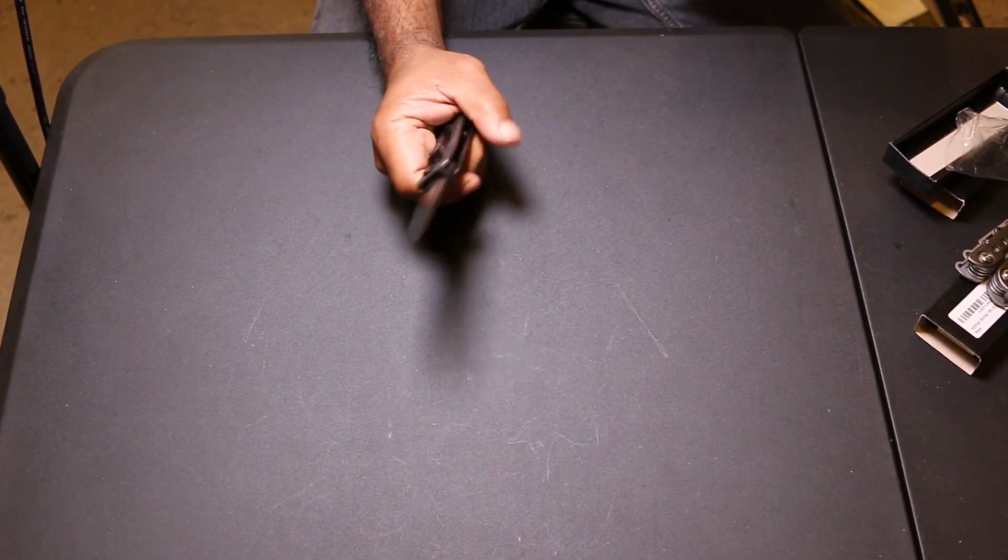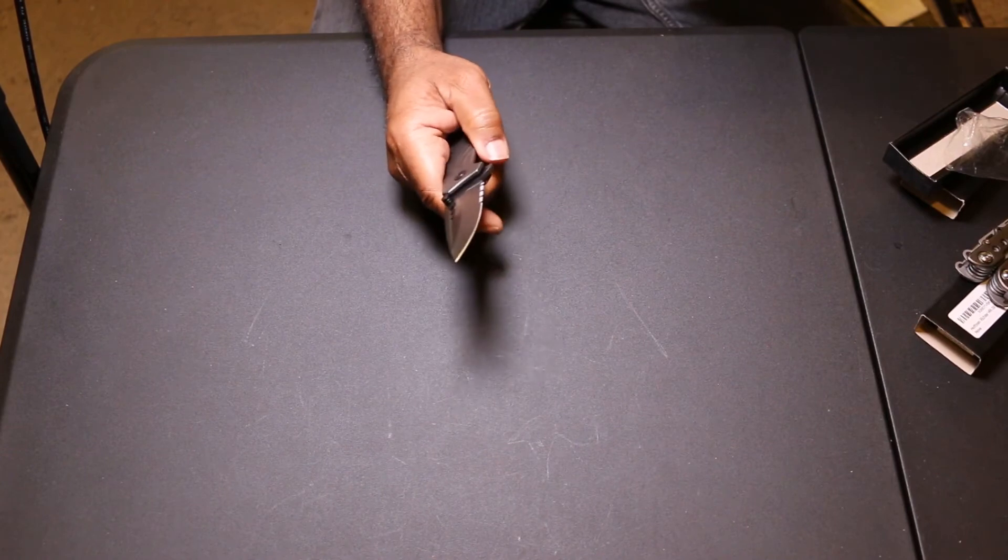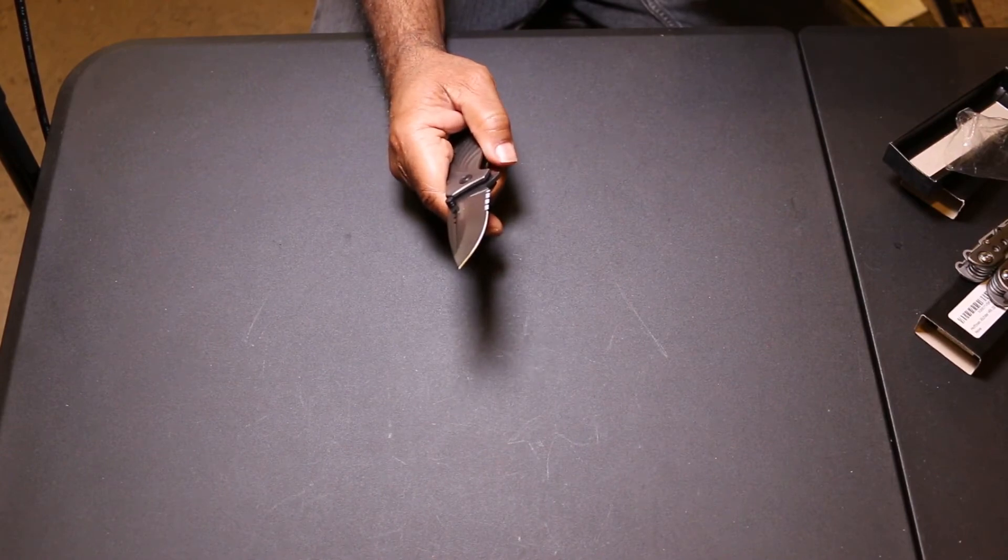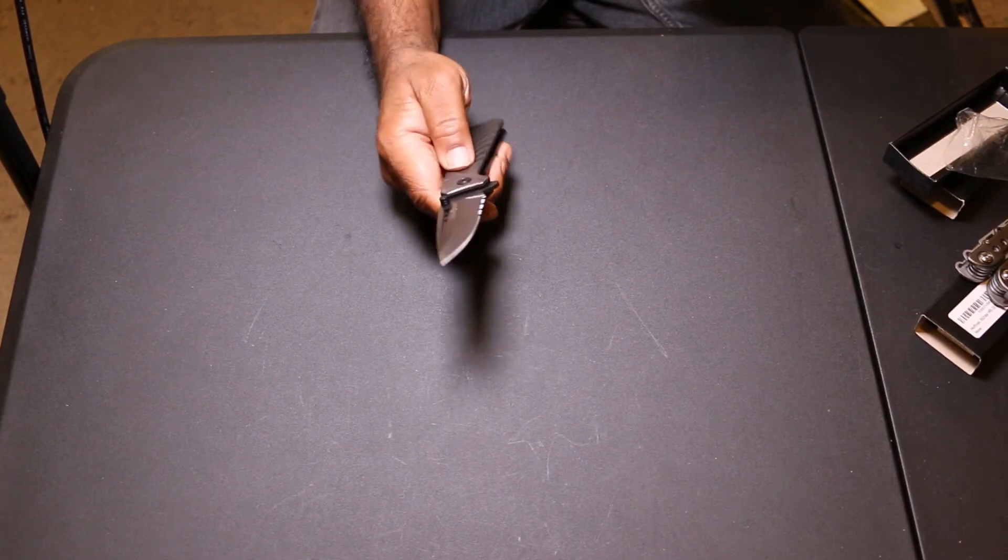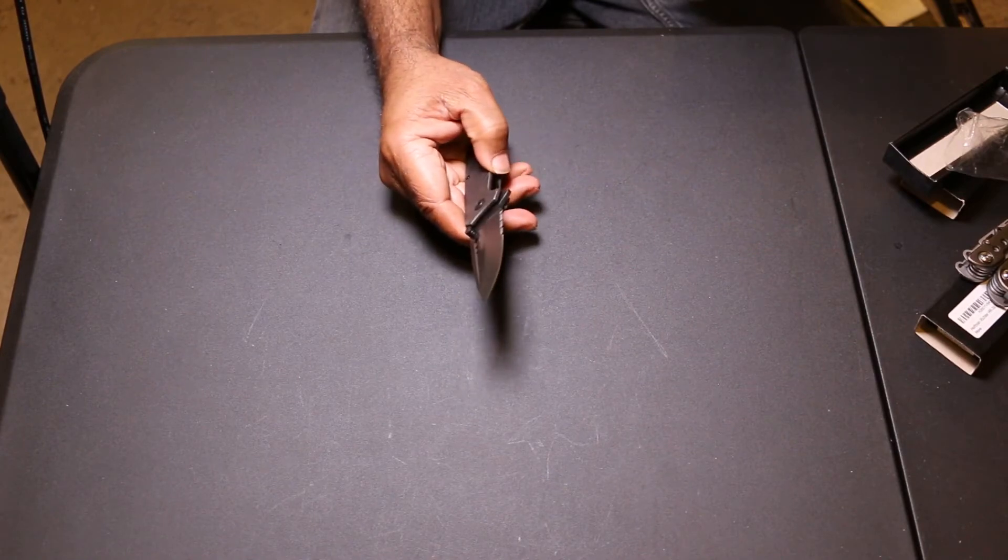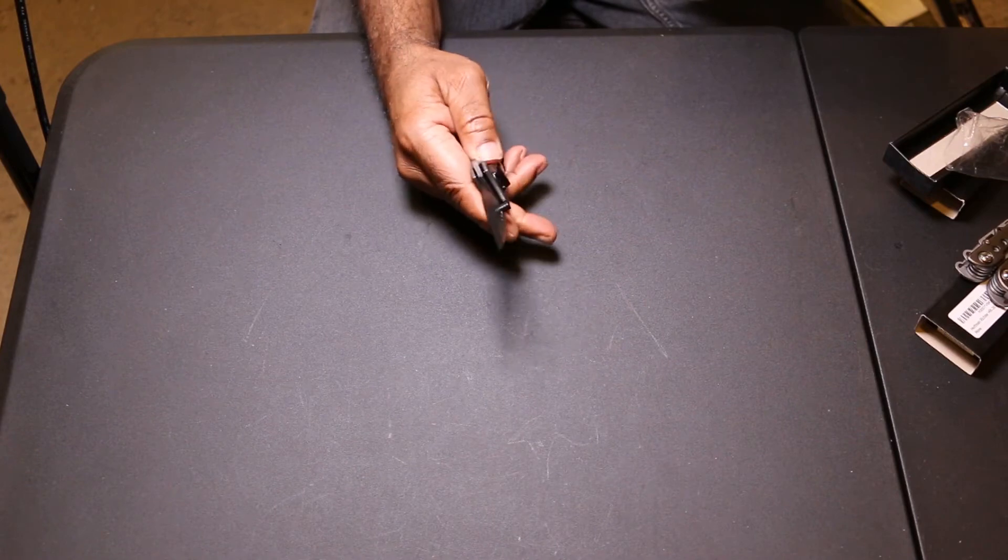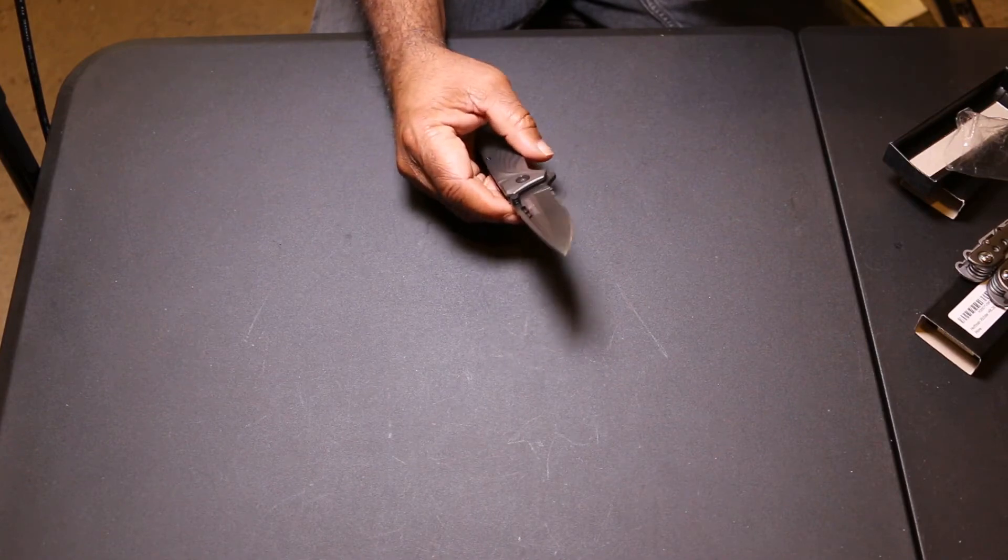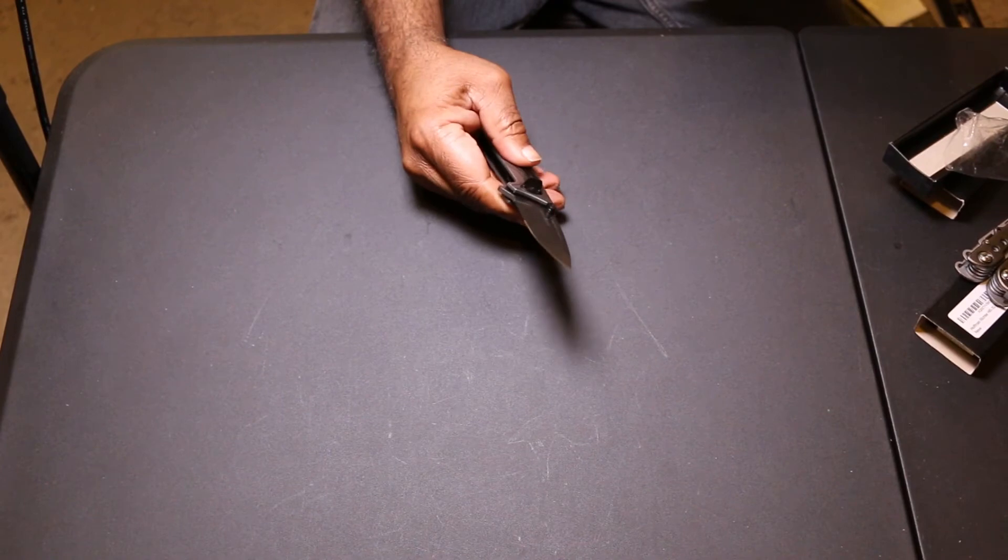It is a titanium coated 440C blade like all the products I've seen so far with them. It has a cord tying glass breaker and they say it'll last a lifetime, but it is a coating so I always take that into consideration because like I said, this is not a high-end knife.